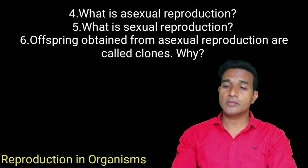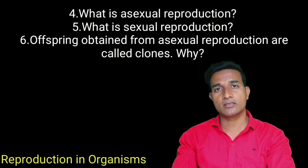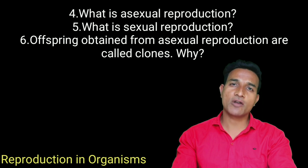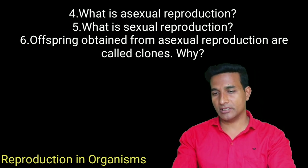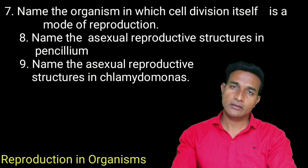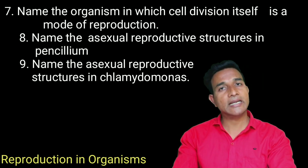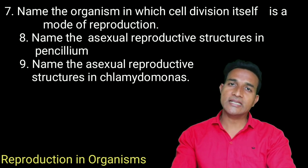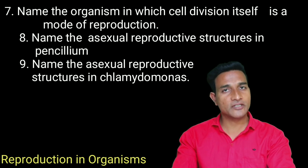Offspring obtained from asexual reproduction are called clones. Why? Because they are morphologically and genetically similar individuals. Name the organism in which cell division itself is a mode of reproduction. In protists and monera, cell division itself is a mode of reproduction.